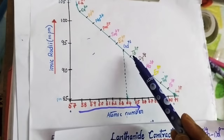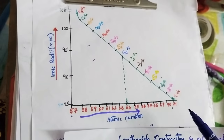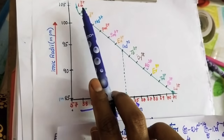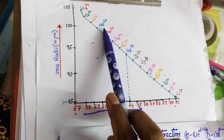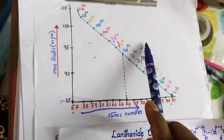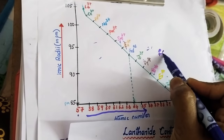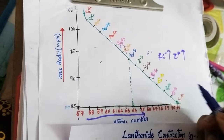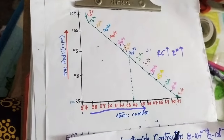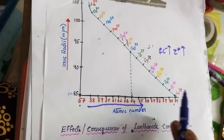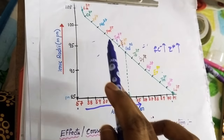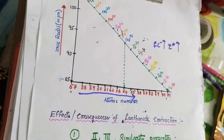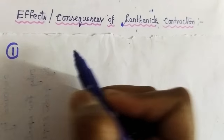On average, each element's atomic radii decreases by about 1.5 picometers, showing a regular decrease from lanthanum to lutetium. This decrease occurs because each element gains one more f electron; as one electron is added, Z* increases by one since f electrons are poor shielders. This is the graphical representation of how lanthanide contraction occurs.